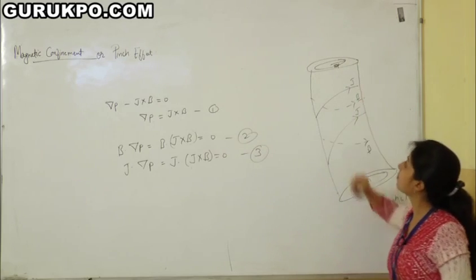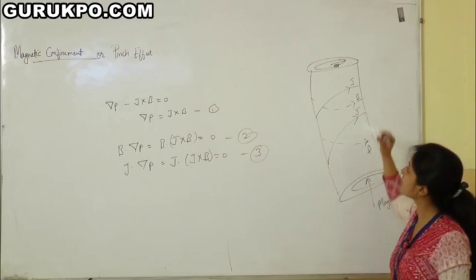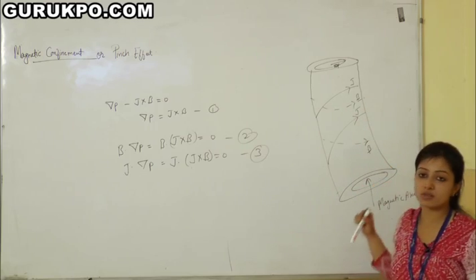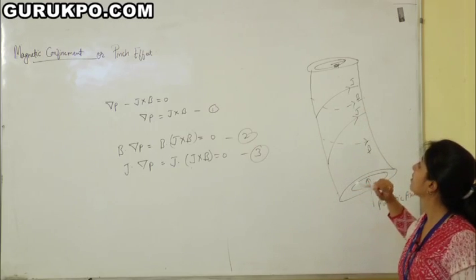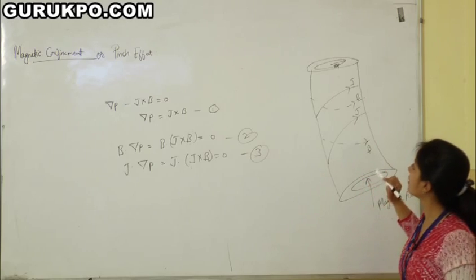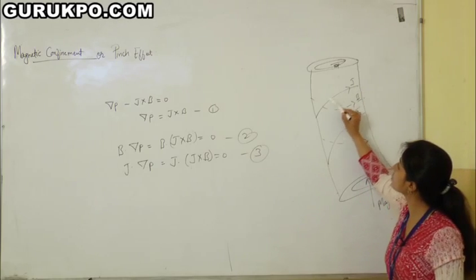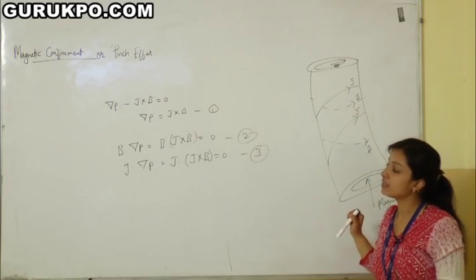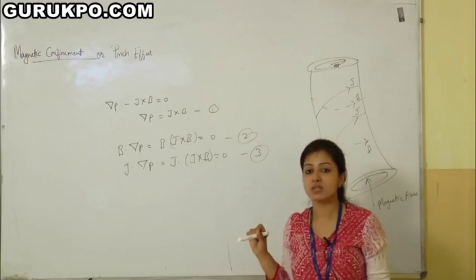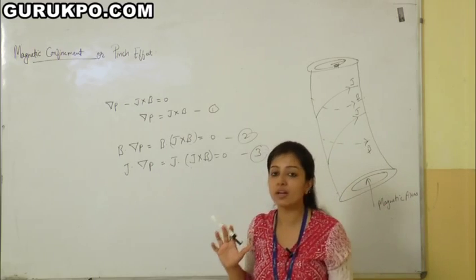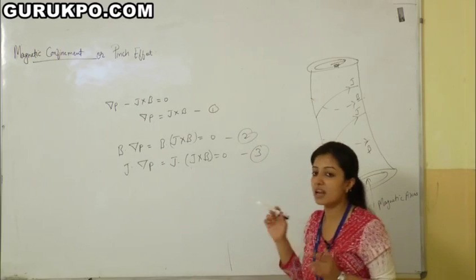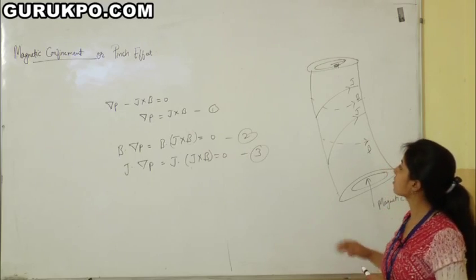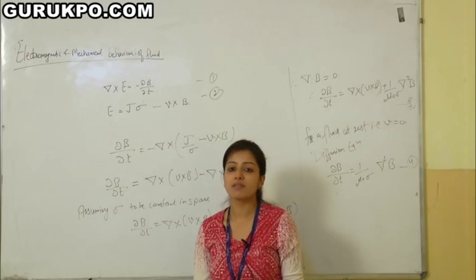On these isobaric surfaces, pressure increases from outside towards the axis and the electromagnetic force j×B also points towards the axis. This means the plasma is contained by the electromagnetic force j×B. This is magnetic confinement — the process of confinement of plasma or a conducting fluid by its self magnetic field, also called the pinch effect.